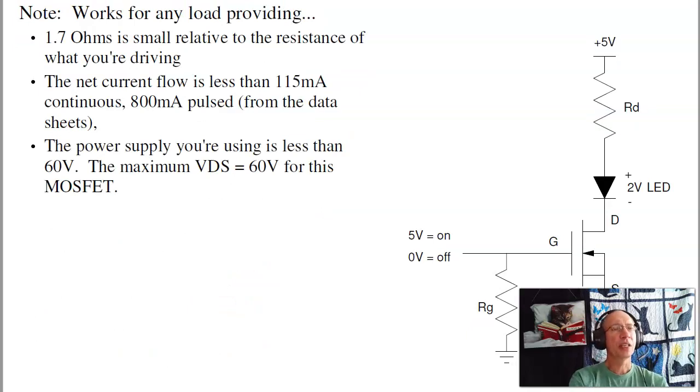And note that the great thing about MOSFETs is they work for any load. It doesn't have to be just an LED. Any load that needs less than 115 milliamps, the capability of this MOSFET, will work. So as long as the 1.7 ohms is small relative to your load, and as long as voltage is less than the 60 volts, that's the maximum for the MOSFET, this MOSFET will work fine.